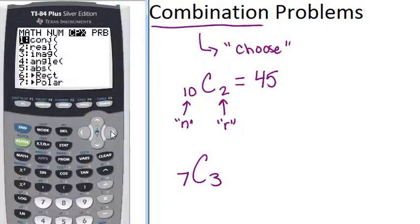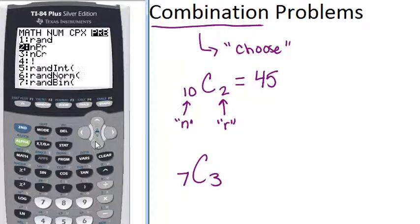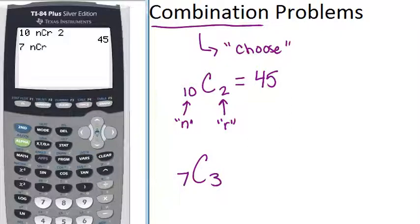Go over to probability, and down to the NCR, or you can push 3 to jump there, enter. Then push 3, which is your value for R, and then push enter to compute.